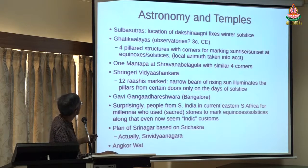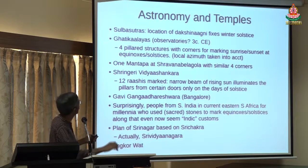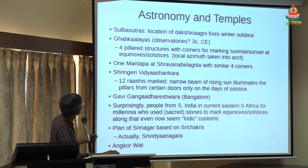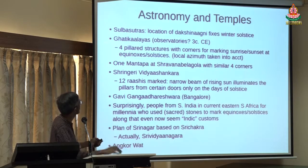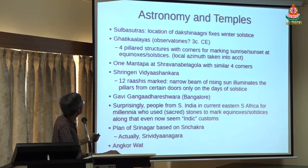In astronomy you will find it, in temples also you will find it. For example, in the Shulva Shastras there is something called Dakshin Agni, which is basically the winter solstice — it is the location of this Agni.